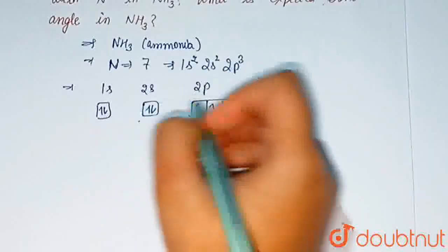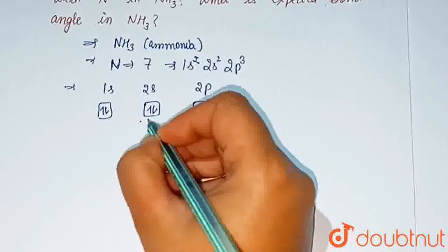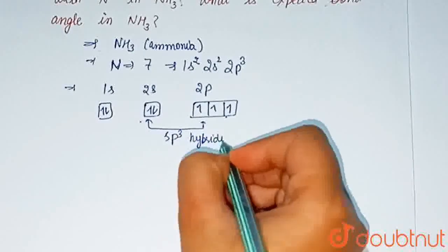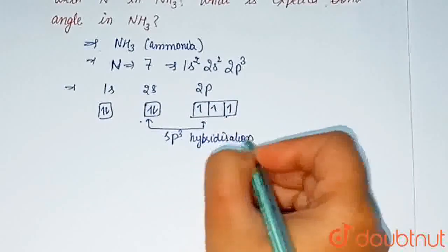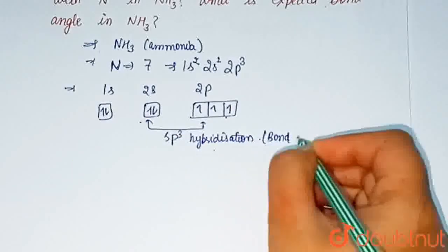2s and 3, 2p orbitals undergo sp3 hybridization and take part in bond formation.